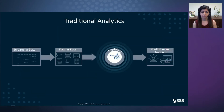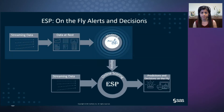Traditionally, the streaming data is being gathered in data warehouses or in the cloud, and then modeling happens on this historical data, and predictions and decisions are made based on these models. With IoT platforms like SAS's event stream processing, these models can be used to score the data as soon as it is streamed, and predictions and alarms can be generated on the fly.